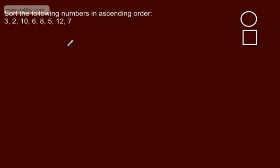So, let's have a look at implementing the quicksort. We're asked to sort the following numbers in ascending order. Ascending, we're going from smallest to largest. Descending, we would go from largest to smallest.